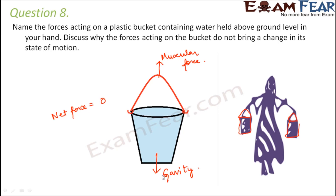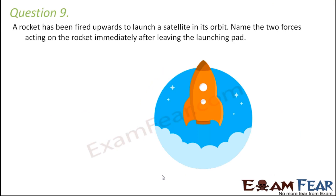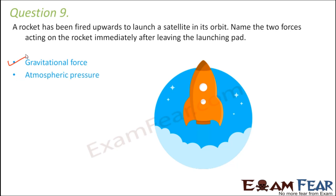Question number nine: a rocket has been fired upwards to launch a satellite in its orbit. Name the two forces acting on the rocket immediately after leaving the launching pad. As the rocket moves upward, one force is always the gravitational force acting towards the center of the earth. The second force is atmospheric pressure, because as soon as the rocket leaves the launching pad it has to cross the various layers of the atmosphere, which exert a lot of pressure on it.